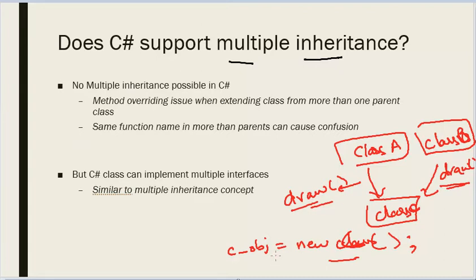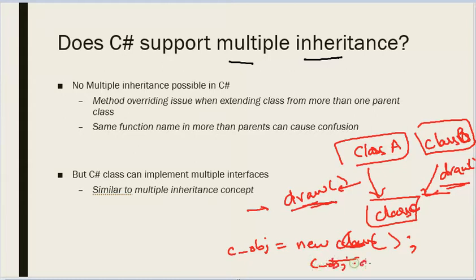This is a very strong reason for not doing it. As I explained here, there is a method overriding issue when extending a class from more than one parent class. In a parent-child relationship, you always have a default implementation of the functions in the parent classes, and then a more detailed implementation in the child classes. So if you create an object of class C and want to call draw — for example, C_object.draw — then we don't know which draw function this is: is it from A or is it from B?